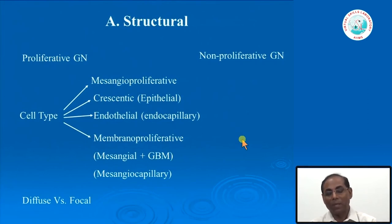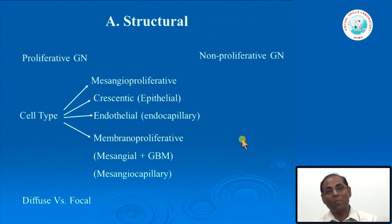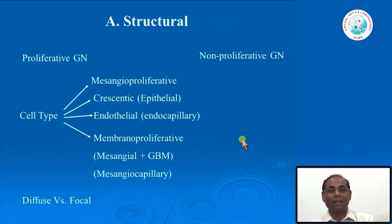When endothelial cell proliferation occurs, we use the term endocapillary proliferative glomerulonephritis. However, when there is endothelial cell proliferation making the glomerulus look solid, it is very difficult to differentiate endothelial cells from mesangial cells. So when we say endocapillary cell proliferation, we mostly mean endothelial cells but there may also be some mesangial cell proliferation. Endocapillary proliferation typically presents as bloodless glomeruli with no visible capillary lumens.